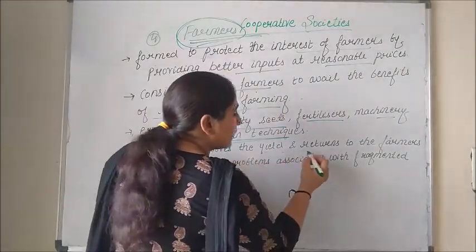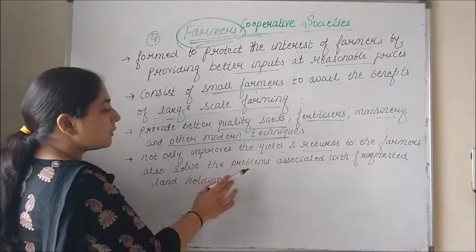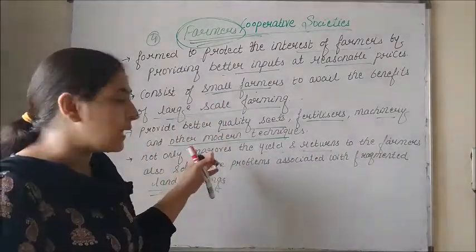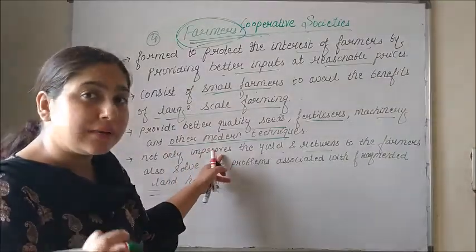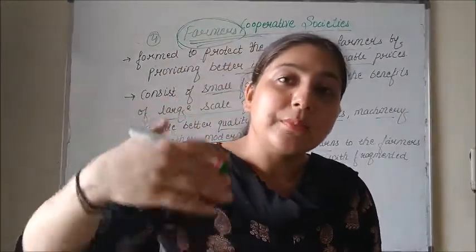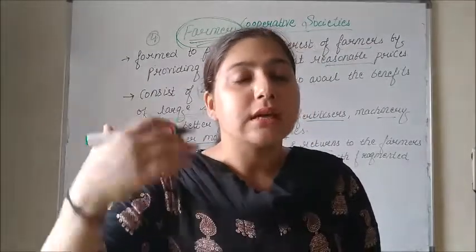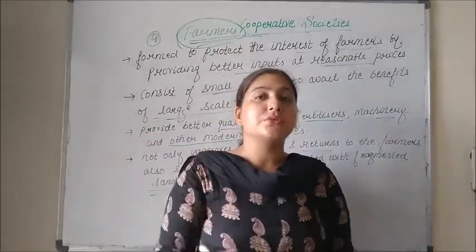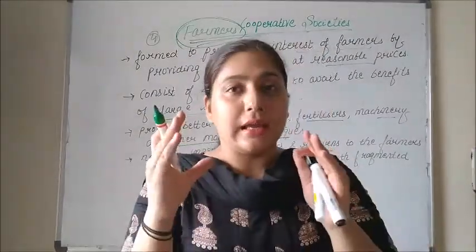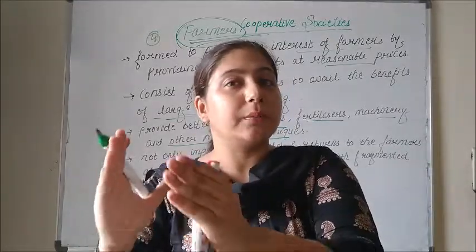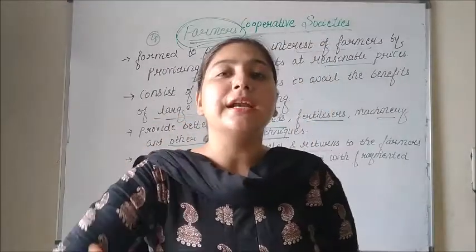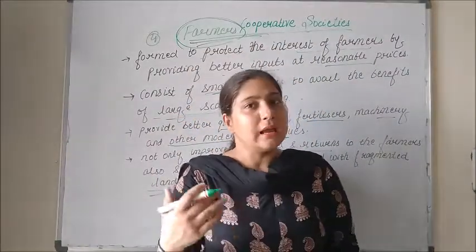These cooperative societies not only improve the yield and returns to the farmers, but also solve the problems associated with fragmented land holdings. Fragmented land holdings means scattered land — a small plot in one place, another small plot somewhere else. Farmers cooperative societies help consolidate these scattered plots and support the farmers in managing them.